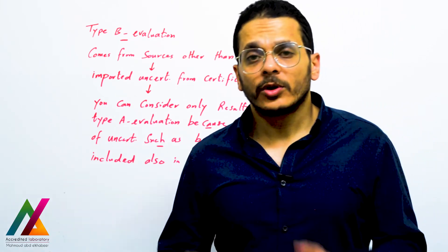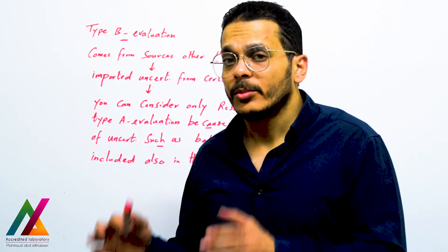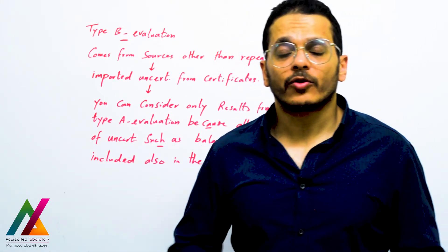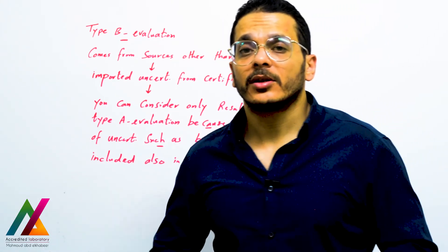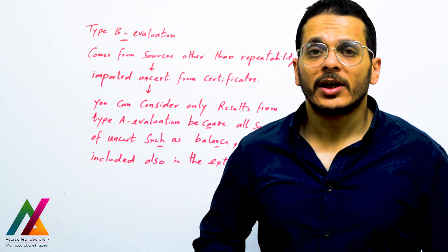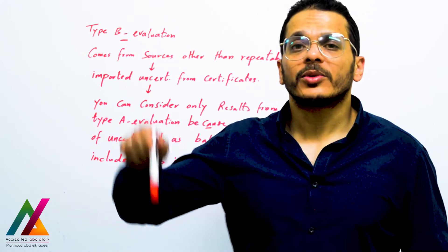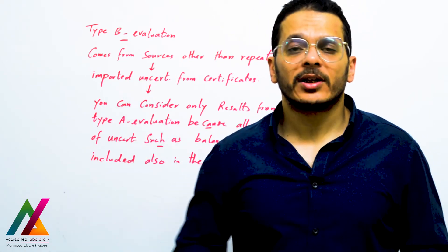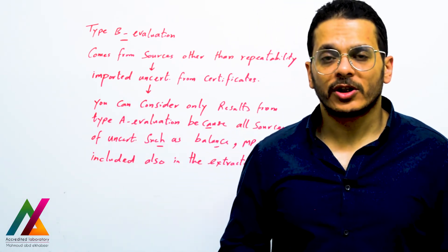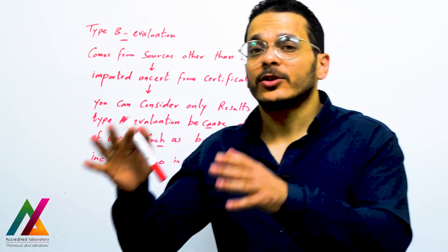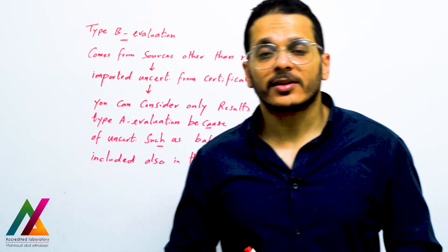So from Type A evaluation we calculated measurement uncertainty due to precision from repeatability and reproducibility, obtaining the pooled relative standard deviation, and measurement uncertainty due to bias as the relative standard uncertainty. Both will be added to the combined uncertainty.